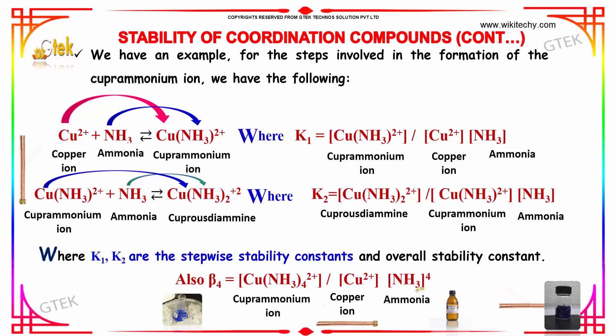For beta4, it will be this one. If it is beta2, you got 2 here. So, beta2 is equal to Cu(NH3)4 2+ divided by Cu2+ times NH3 to the power 4.